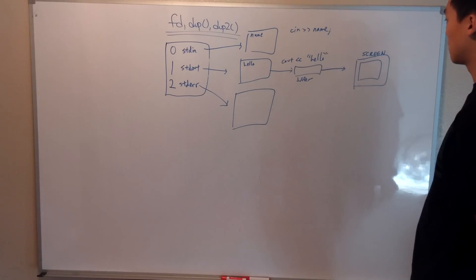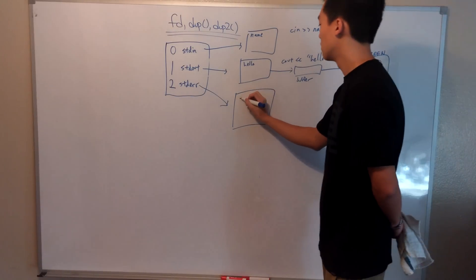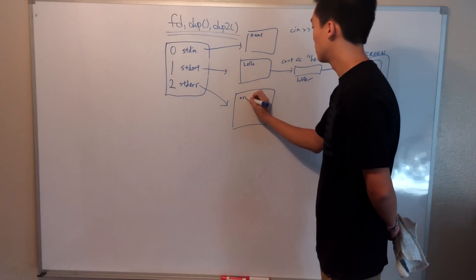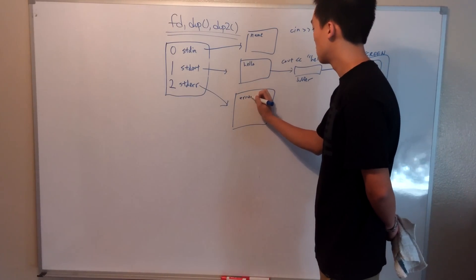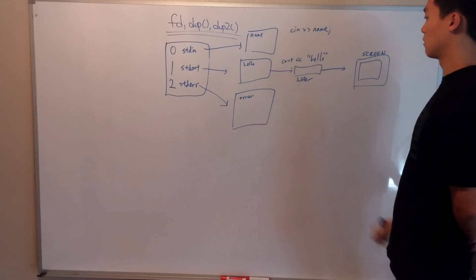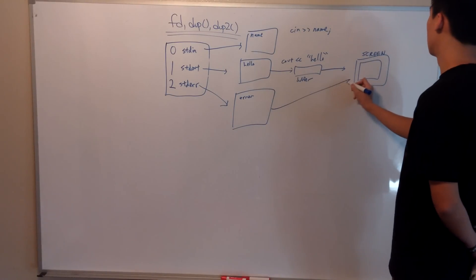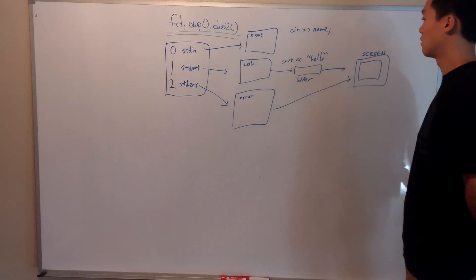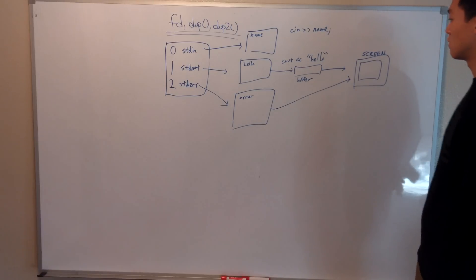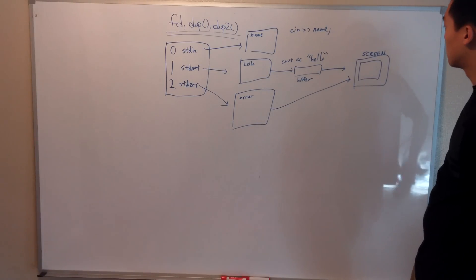Standard error is a file descriptor that the system writes to for printing, but unlike standard out, whatever is to be printed is printed right away rather than being placed in the buffer before printing. Alright, on to dup and dup2.